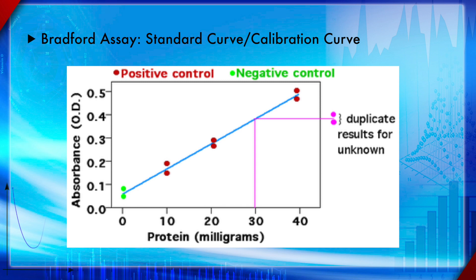The controls include a negative control with no protein, followed by positive controls at increasing concentrations: 10, 20, 30, and 40 micrograms of protein. For each control, you measure the absorbance (OD) level, plot the points on an XY scatter, and apply an appropriate regression method to generate a best-fit line — which is essentially an equation.